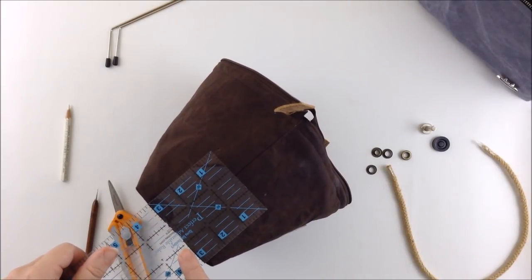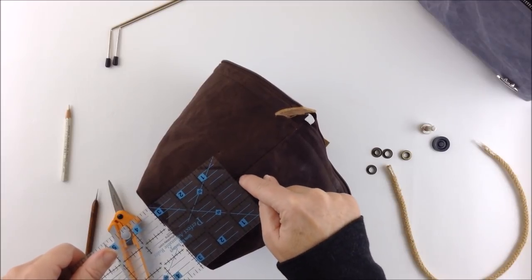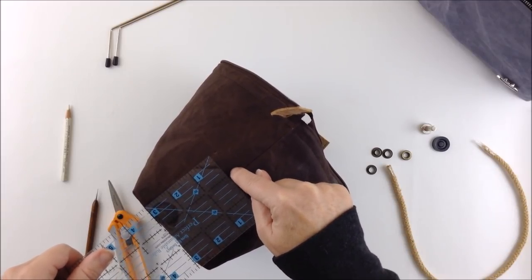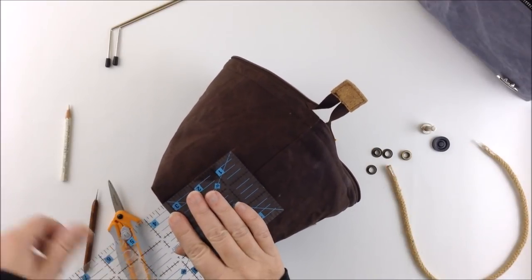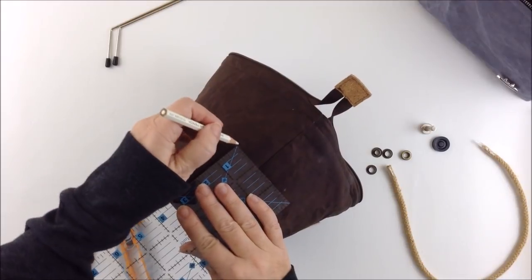So you can see the three inch mark there, you're going to measure up three inches and then from that seam line there you're going to measure outwards one and a quarter inches and make a mark.